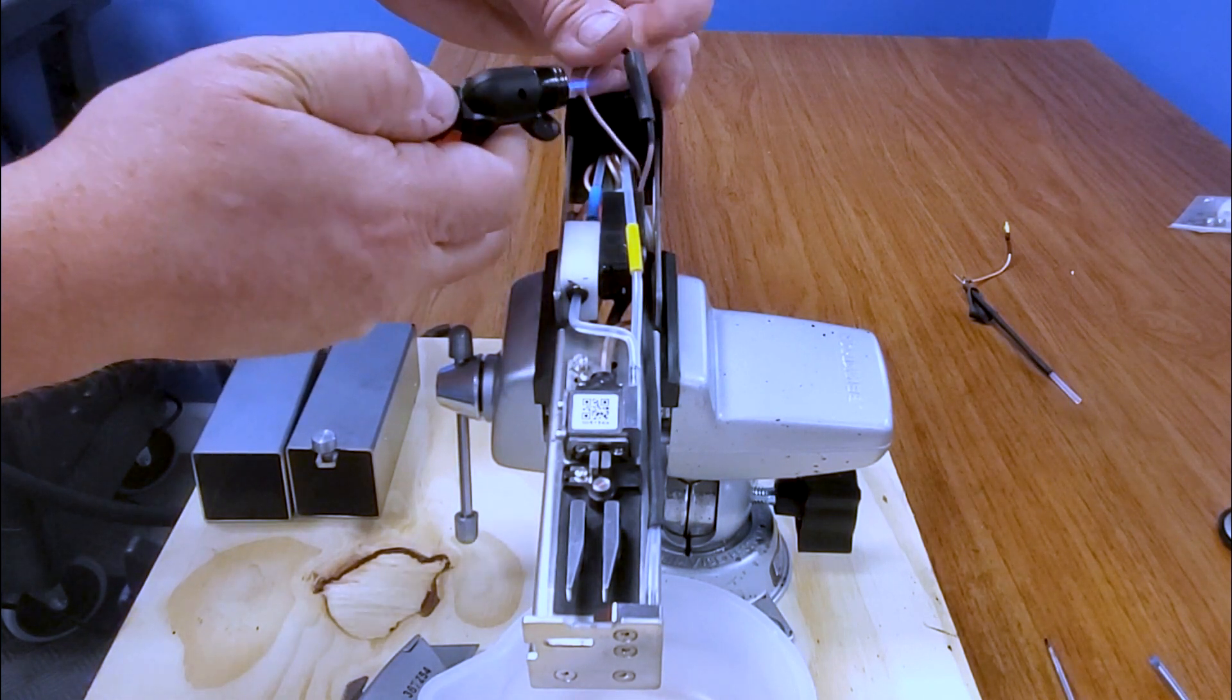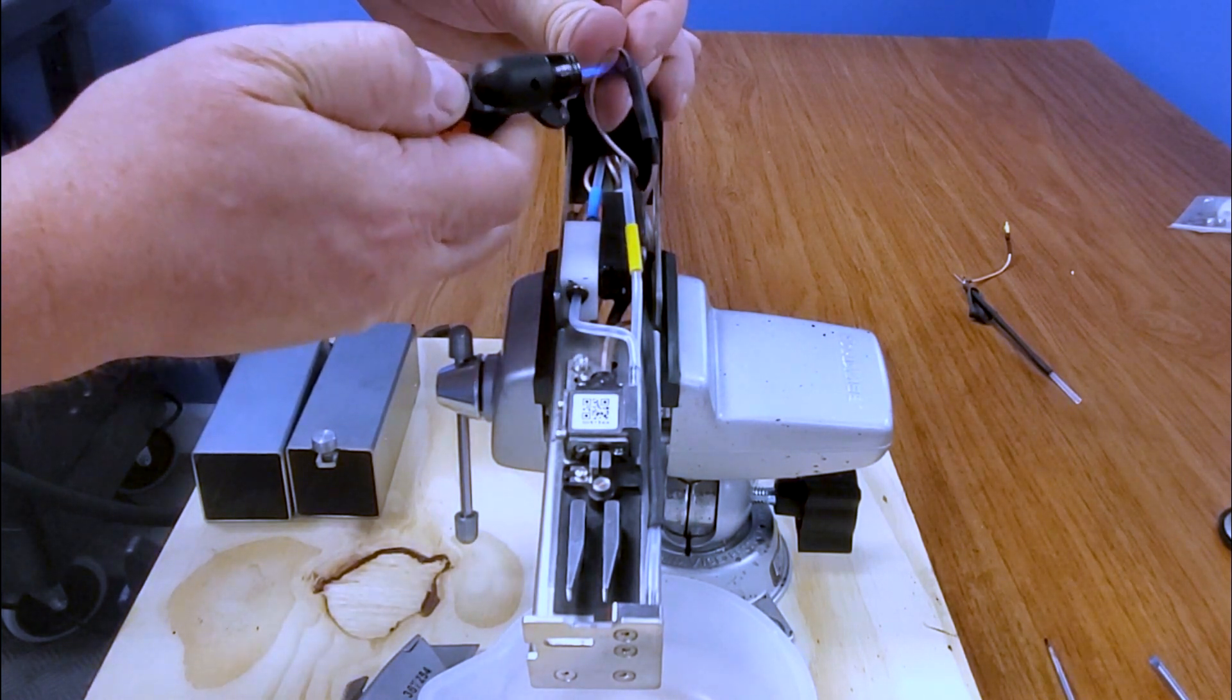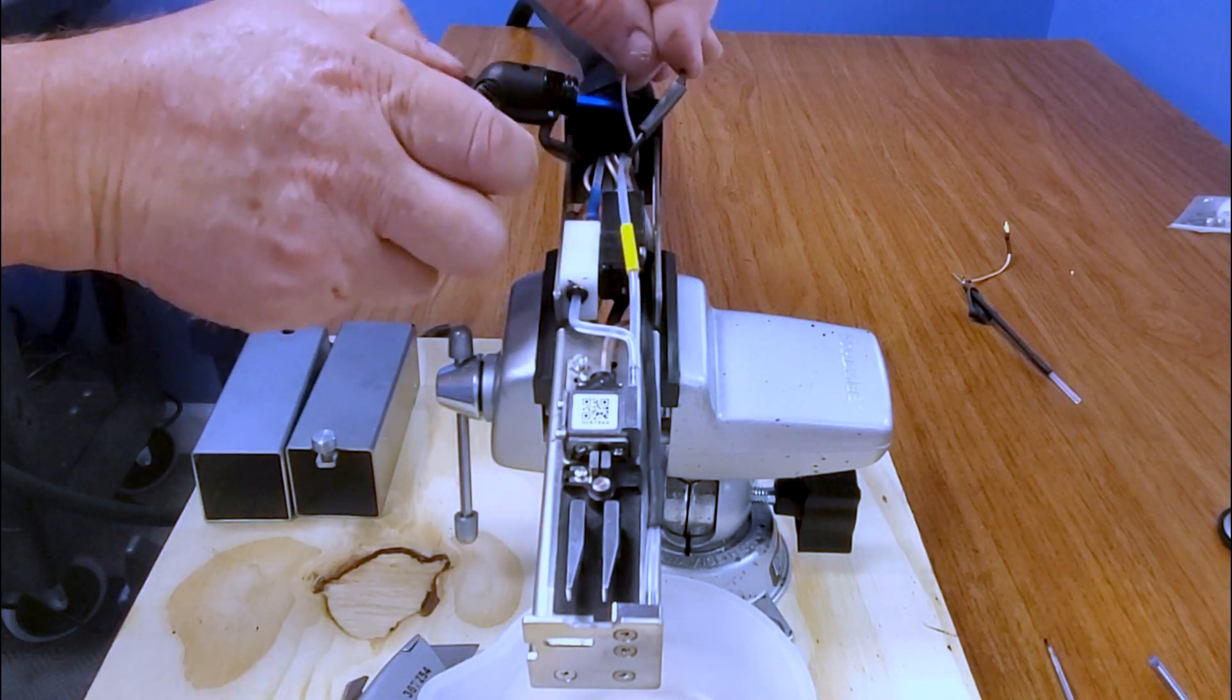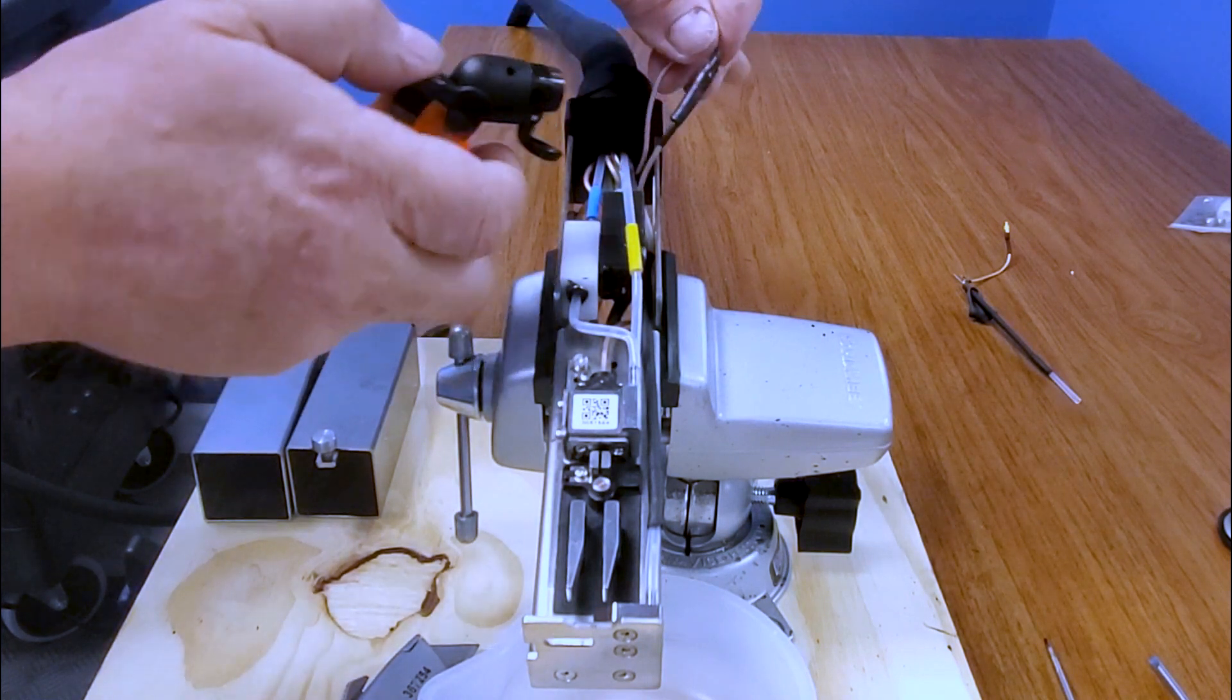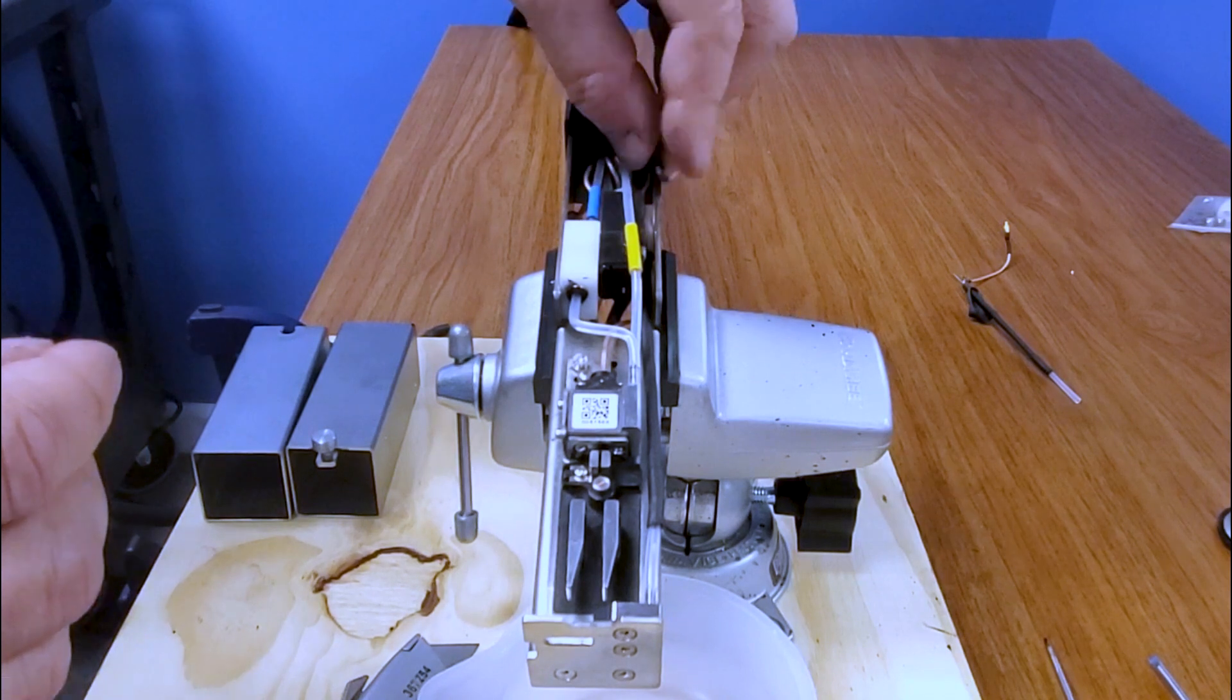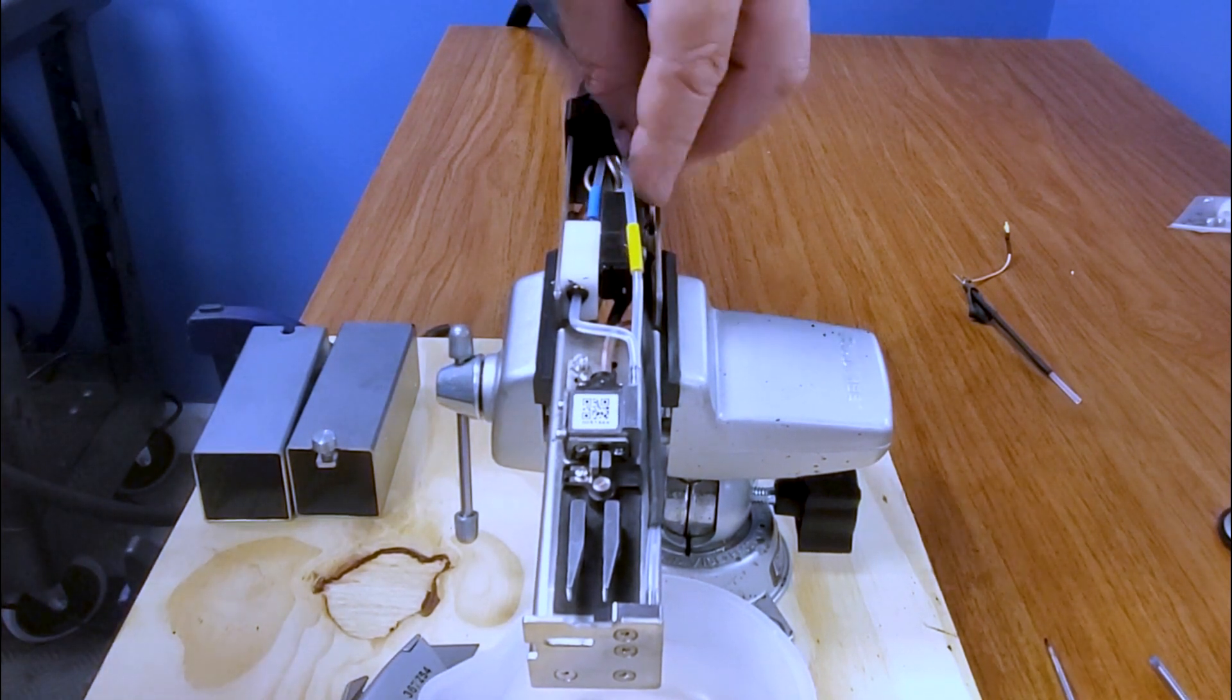I'm using a torch, but again, you can use a lighter or a heat shrink gun. We're going to go ahead and shrink that tube around our coax connector so it will not come apart. When that's all done, we'll just bend that wire down.